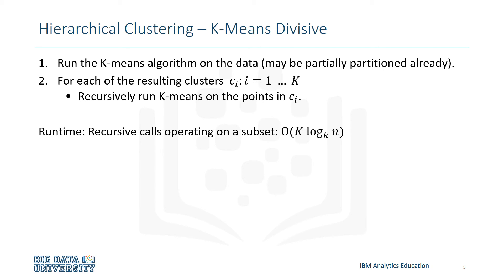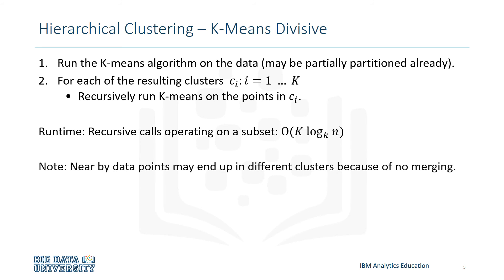So, for example, k equals two would split a cluster into two clusters, then each of those clusters would be split into two more clusters, totaling four clusters, and so on. Note that whenever a cluster is split into different subsets, the clusters are never merged again. The k-means algorithm only runs on each specific subset of data that it's working with.